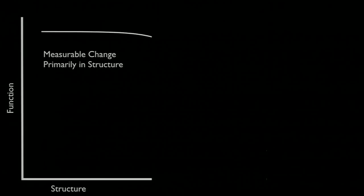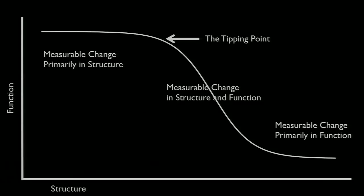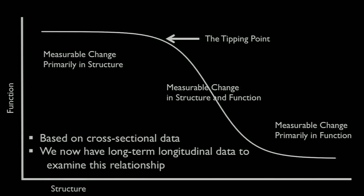So what I'm saying is that in this portion of the curve, that there's measurable change in structure, primarily, not so much in function. In this portion of the curve, you have measurable change in both. And then in this portion of the curve, you have primarily measurable change in function. And the tipping point is where you go from having a poor relationship between structure and function to a strong relationship between the two. But once again, all of these claims were based on cross-sectional data, and we now have longitudinal data to examine this relationship.